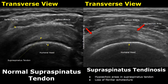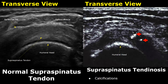This is a case of supraspinatus tendinosis. In this condition, we will find hyperechoic areas in the supraspinatus tendon. In some cases of tendinosis, we may find calcifications — we see hyperechoic calcifications within the supraspinatus tendon.